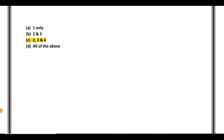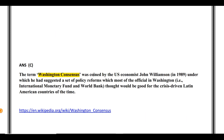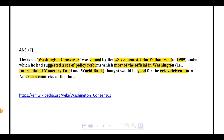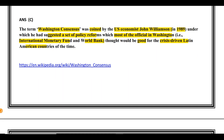The answer is C — two, three, and four. The Washington Consensus was coined by US economist John Williamson in 1989. In this set of policy reforms, he suggested policies which officials in Washington — such as the IMF and World Bank — thought would be good for the crisis-driven Latin American countries of that time. For more details, refer to the Wikipedia link provided.